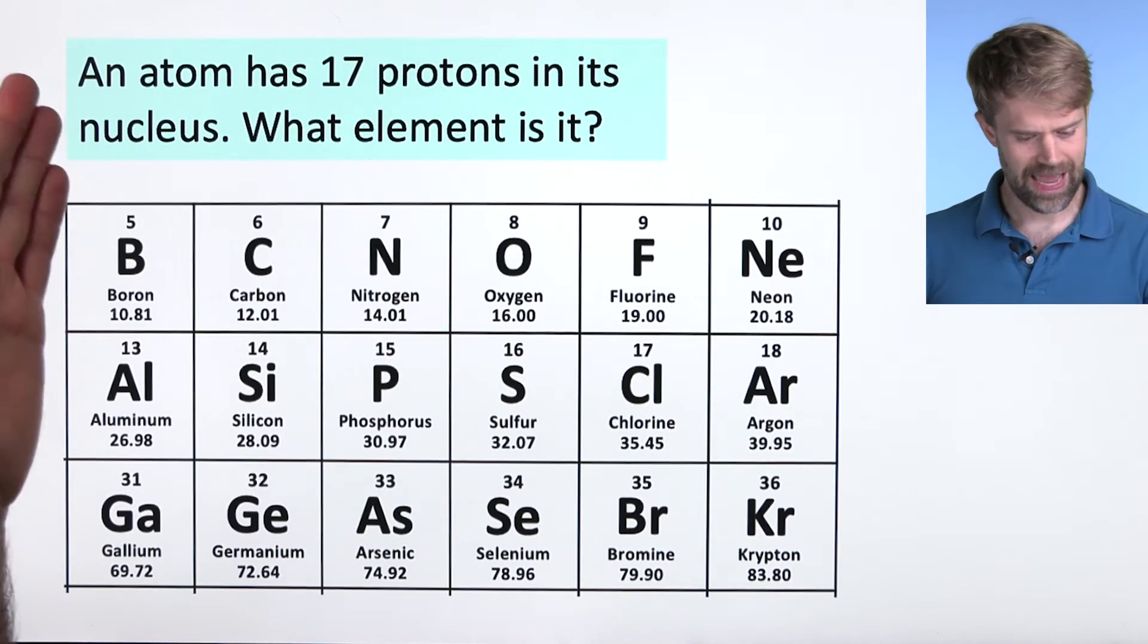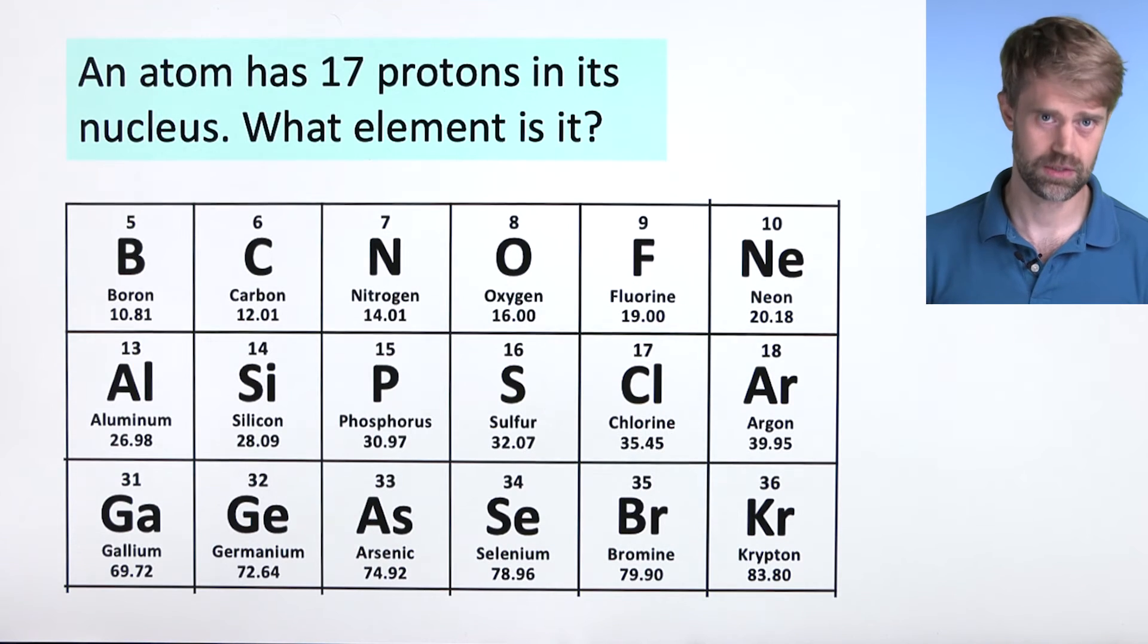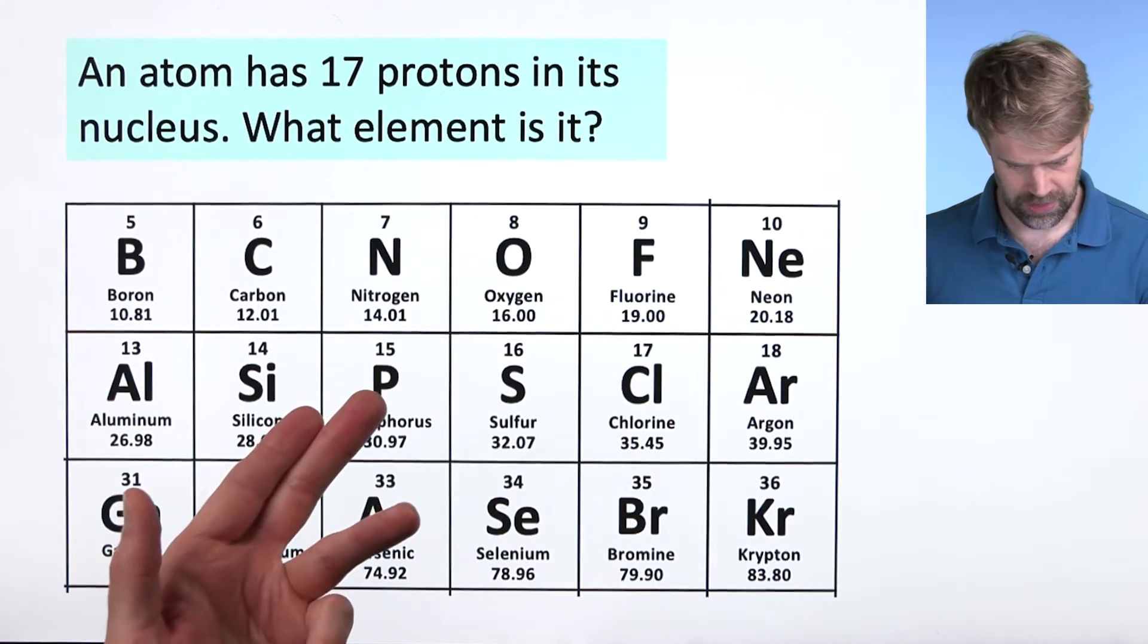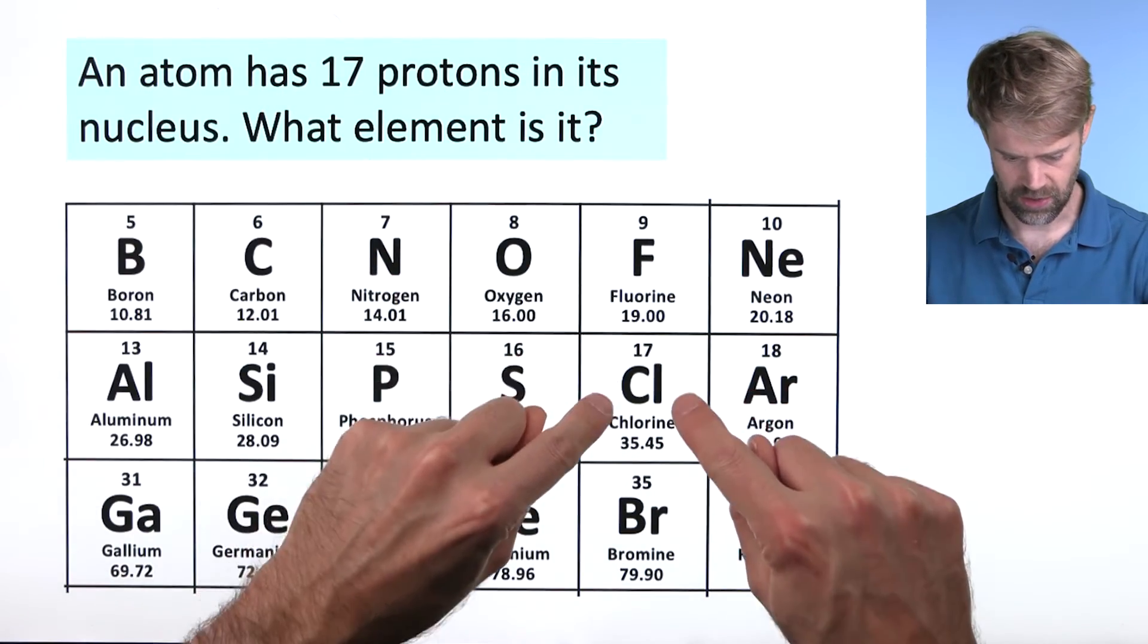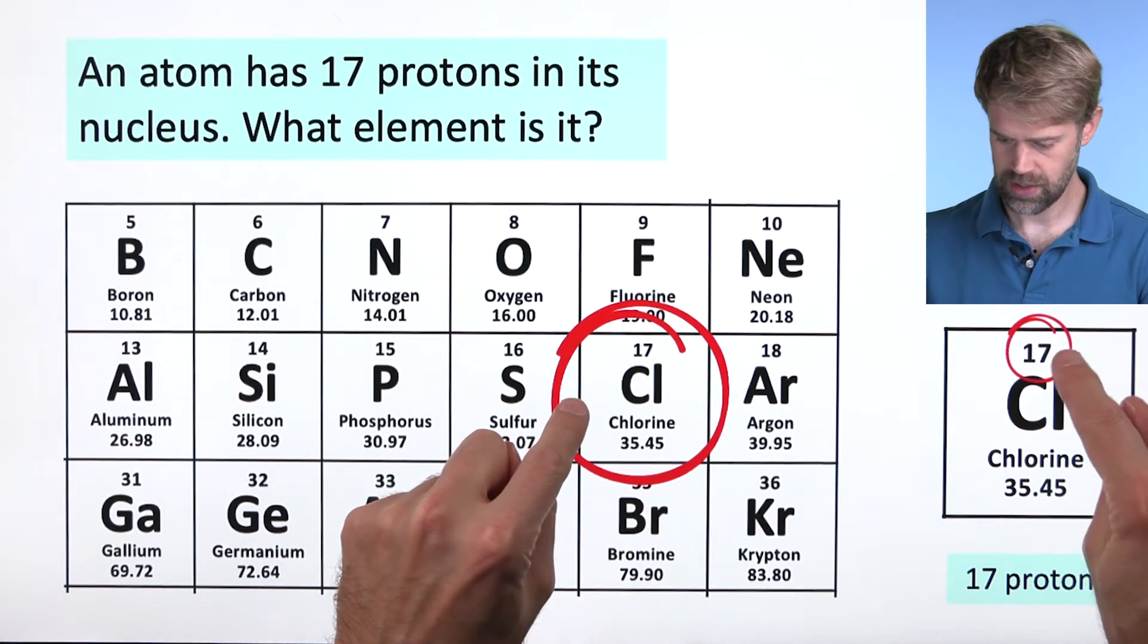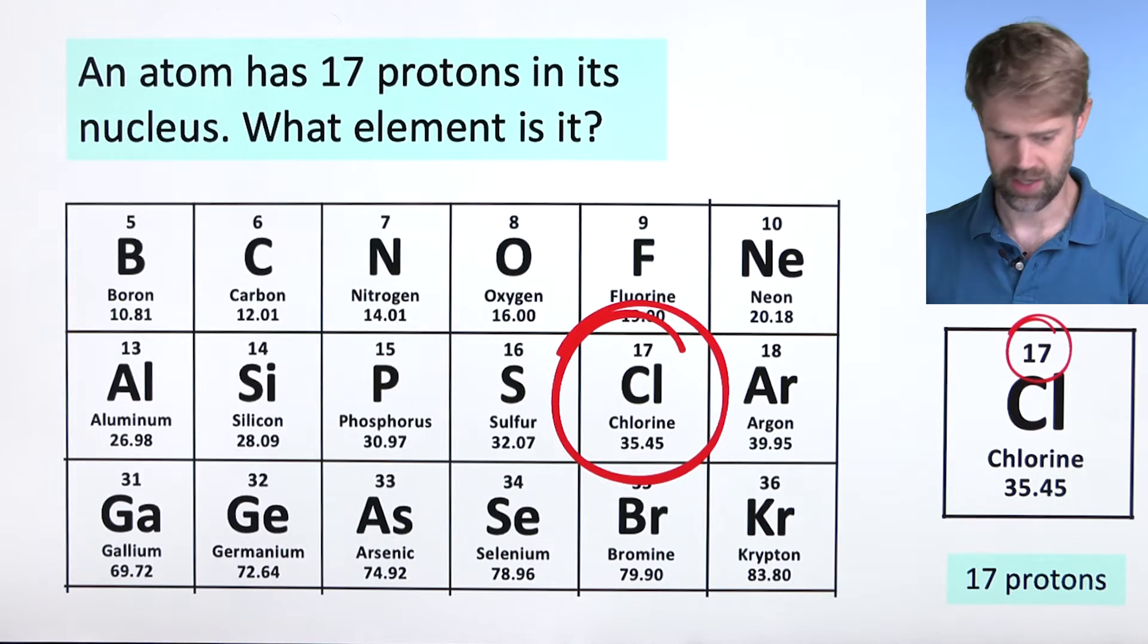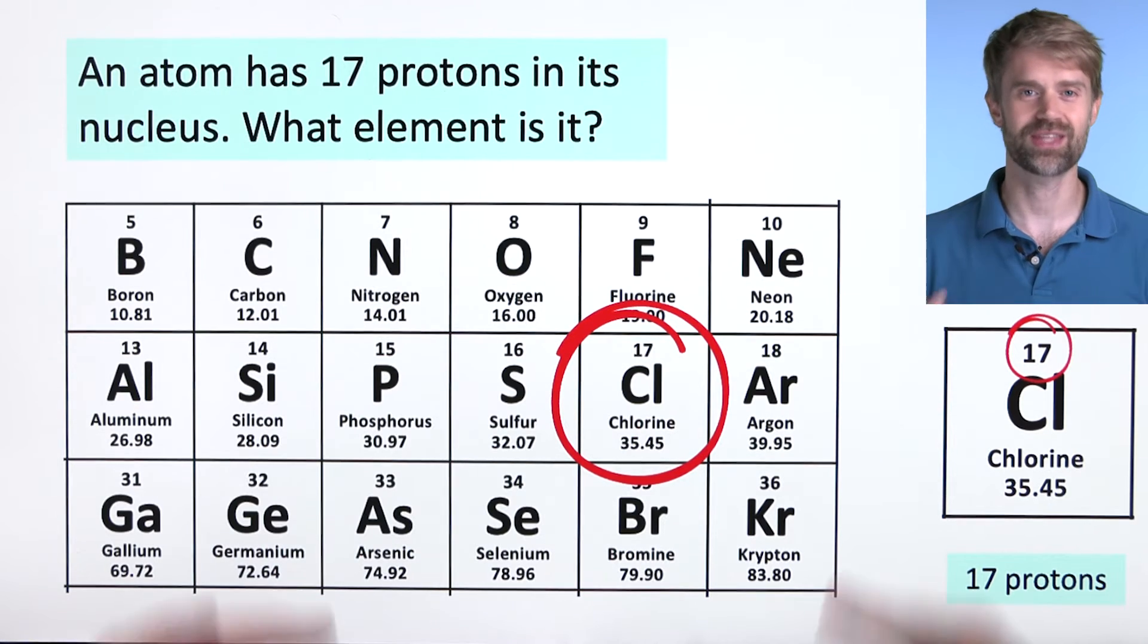And finally, an atom has 17 protons in its nucleus. What element is it? Okay. We look through the periodic table again to find atomic number 17. There it is. Chlorine, atomic number 17, 17 protons. Okay. It really is that simple.